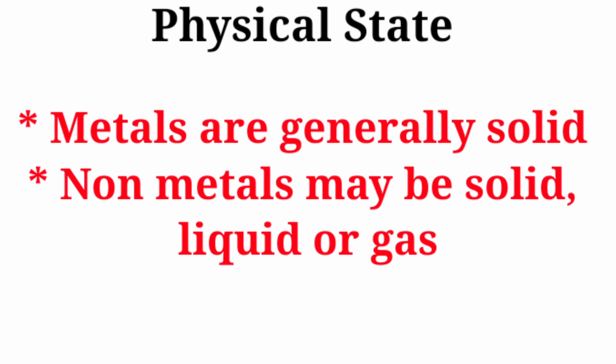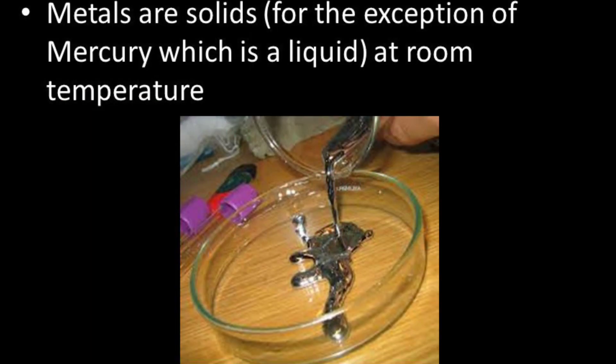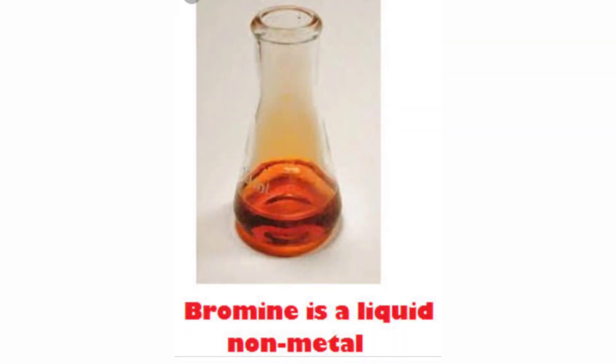Next, physical state. Metals are generally solid. On the other hand, non-metals may be solid, liquid, or gas. But again, the exception in the physical state case is mercury — mercury is in liquid form at room temperature, which means 20 to 25 degrees Celsius.